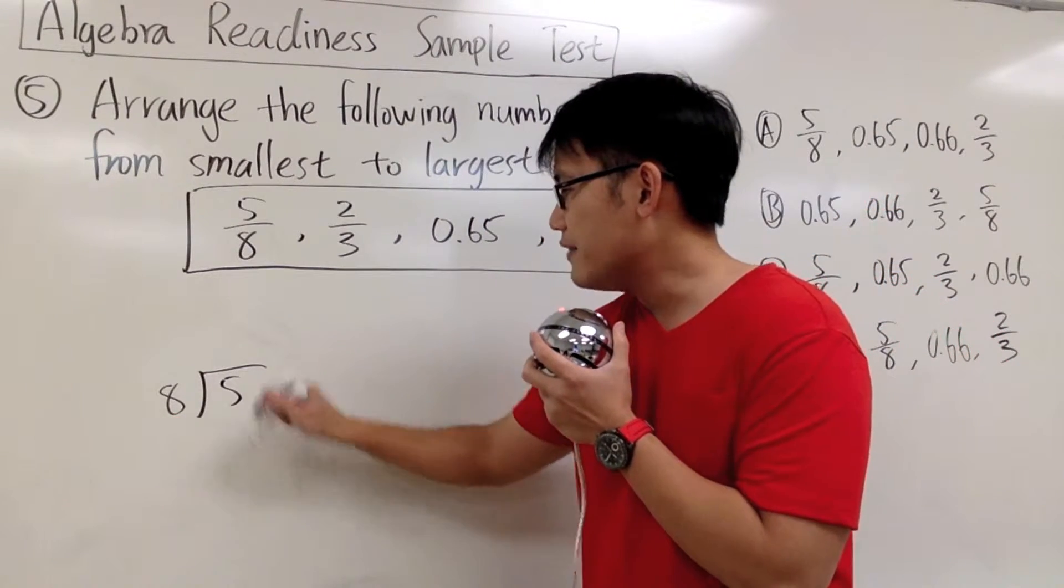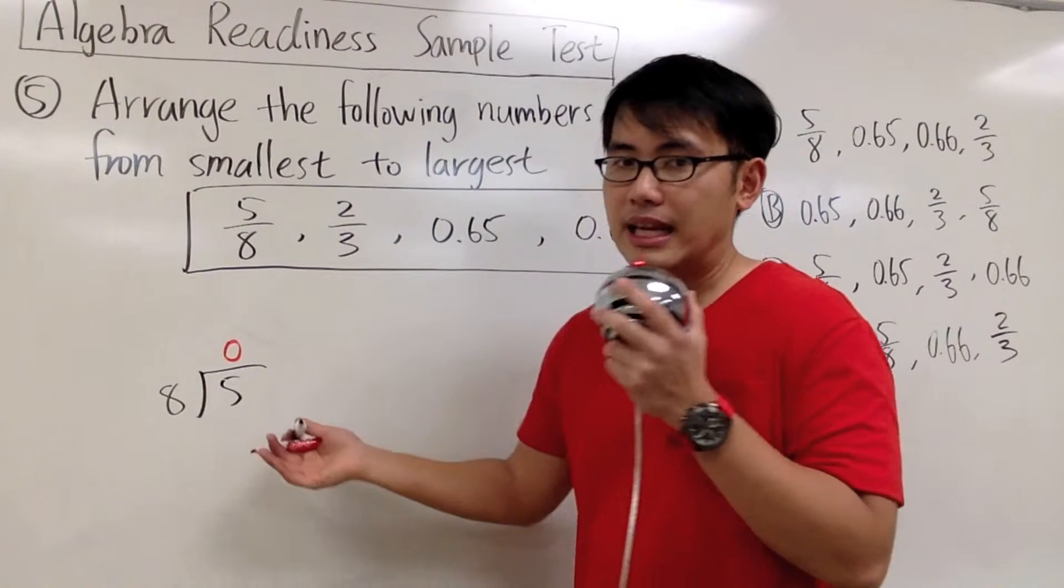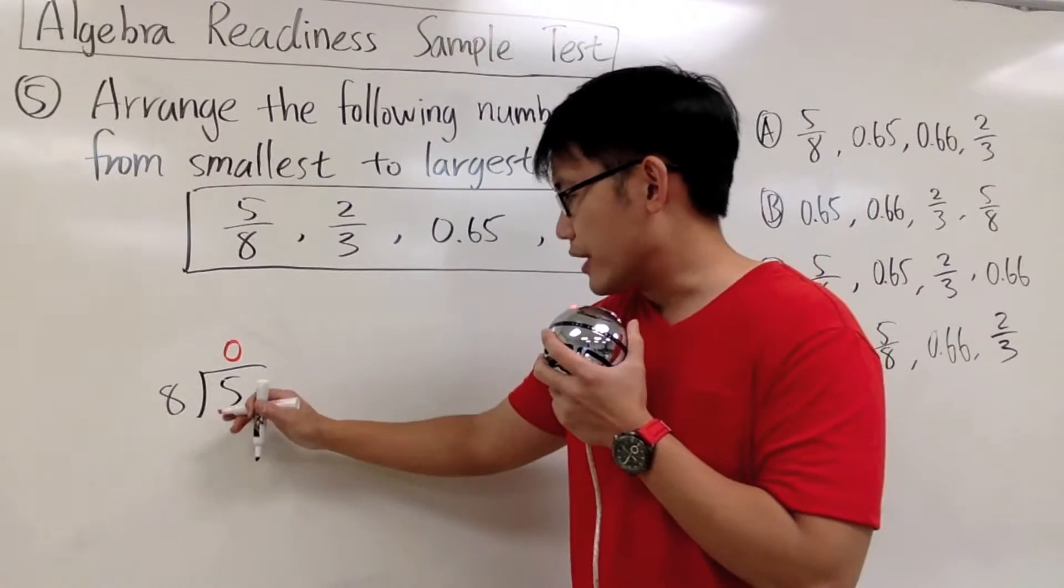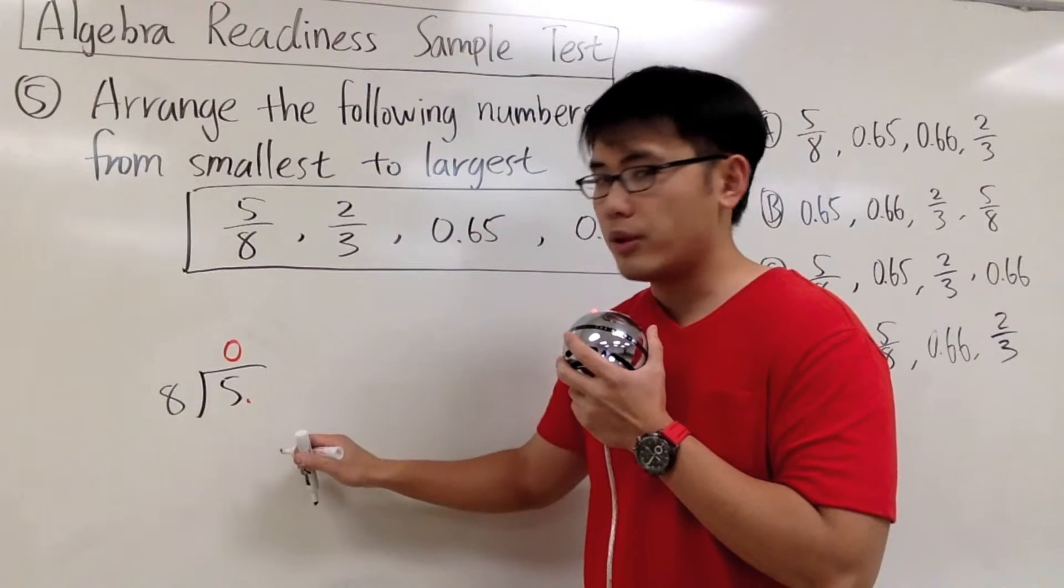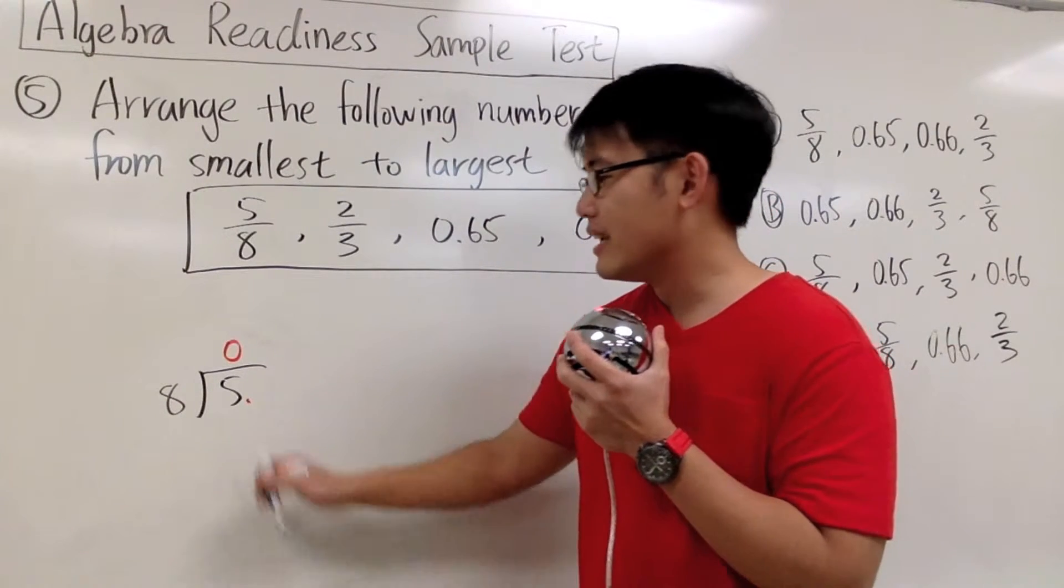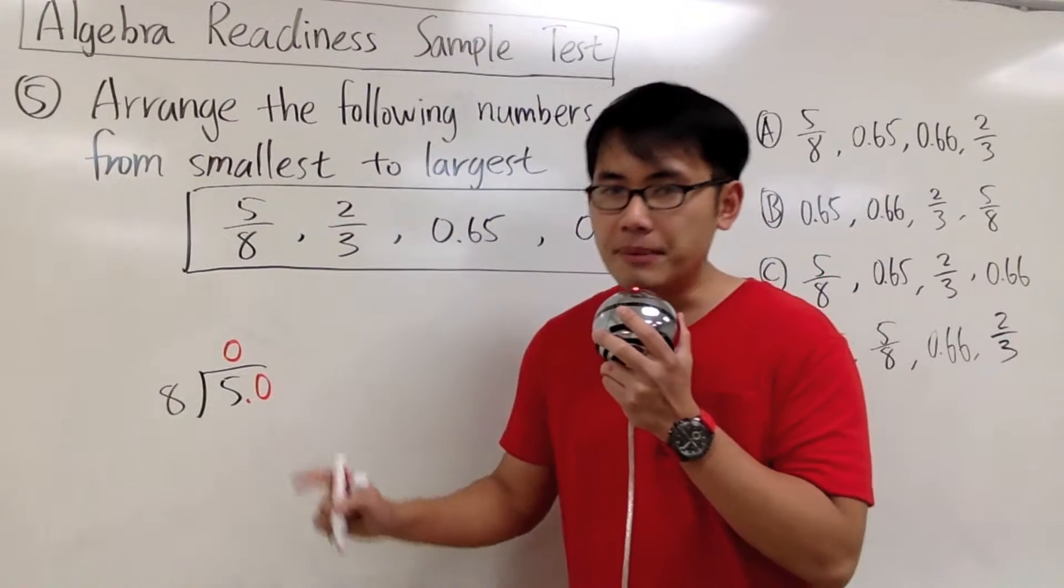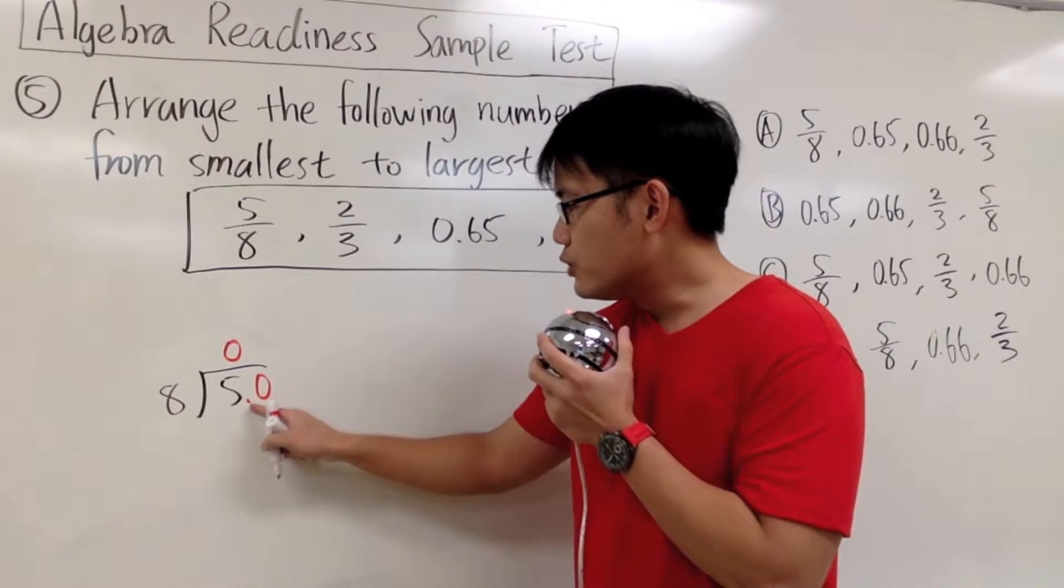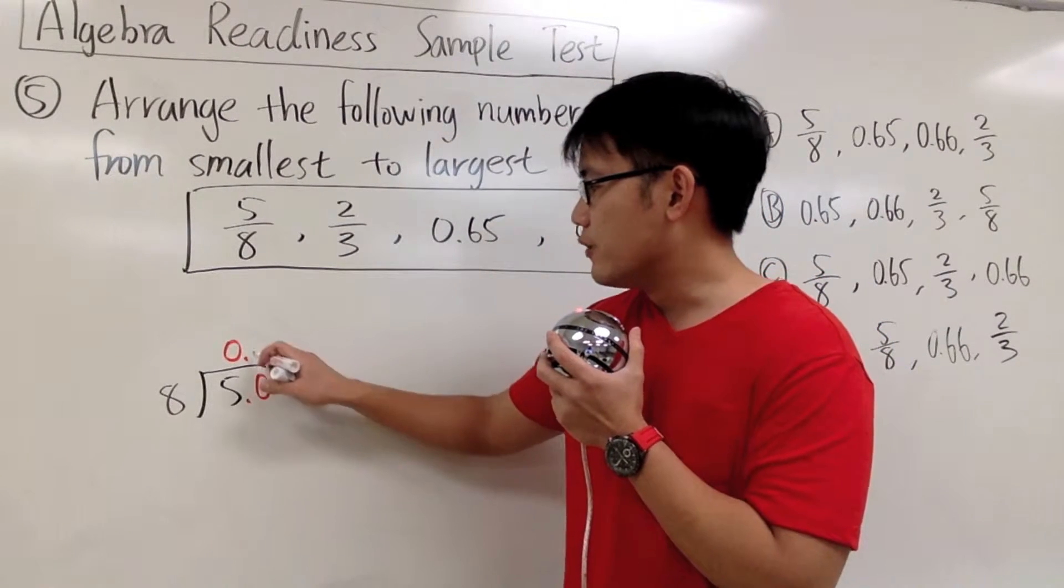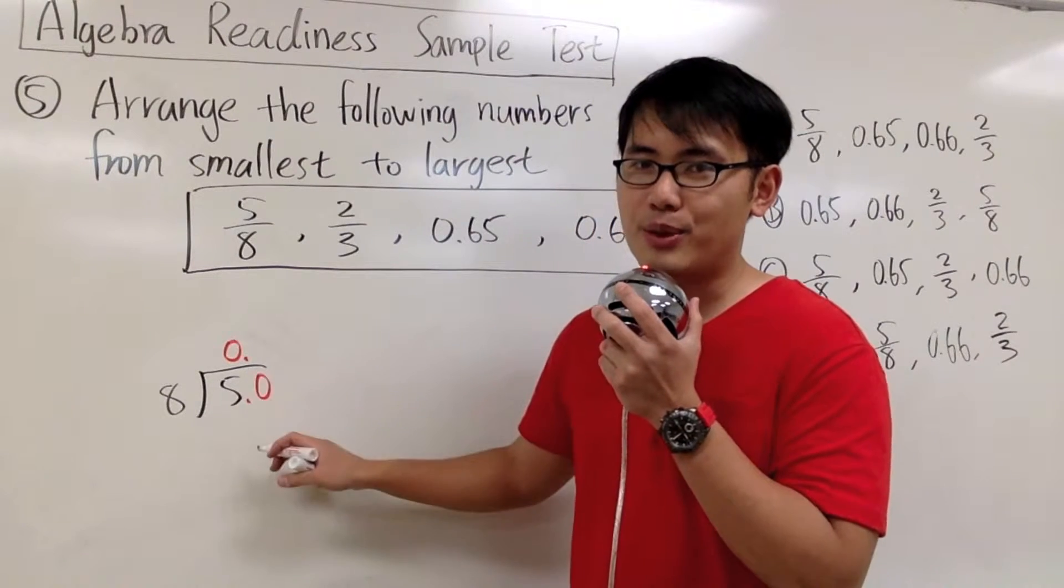8 goes into 5, 0 times, but then I have to continue. To continue with this, look at the 5 and then we put a decimal point and then attach a 0 to it. 5 is the same as 5.0. And then after we've done this, we should also indicate the decimal point for the answer part. We have to line up with the decimal point.